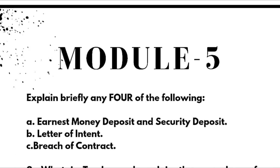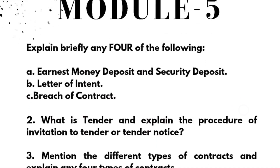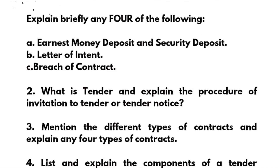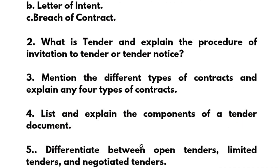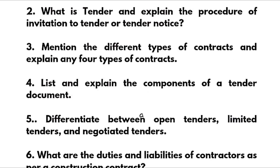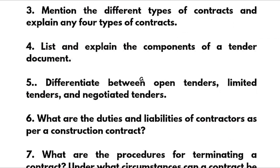From Module 5, one super important question is: explain briefly any four of the following — earnest money deposit, security deposit, letter of intent, and breach of contract. Also: what is a tender and explain the procedure of invitation to tender or tender notice. Next super important question: mention the different types of contracts and explain any four types. Also: list and explain the components of a tender document.